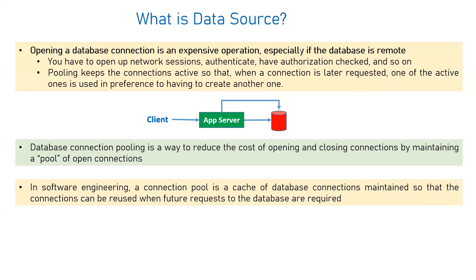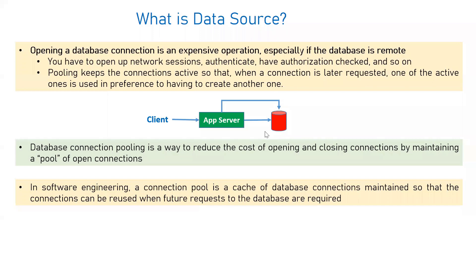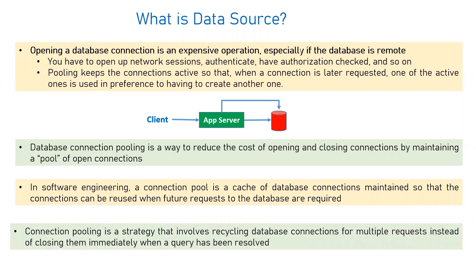Another generic definition in software engineering: a connection pool is a cache. A cache contains data utilized by applications the maximum number of times — the code used most often gets into the cache. The same concept applies to your connection pool, where you have a cache of active connections reused whenever an application needs a connection with the database. Connection pooling is also a strategy that involves recycling database connections for multiple requests instead of closing them immediately after a query has been resolved.